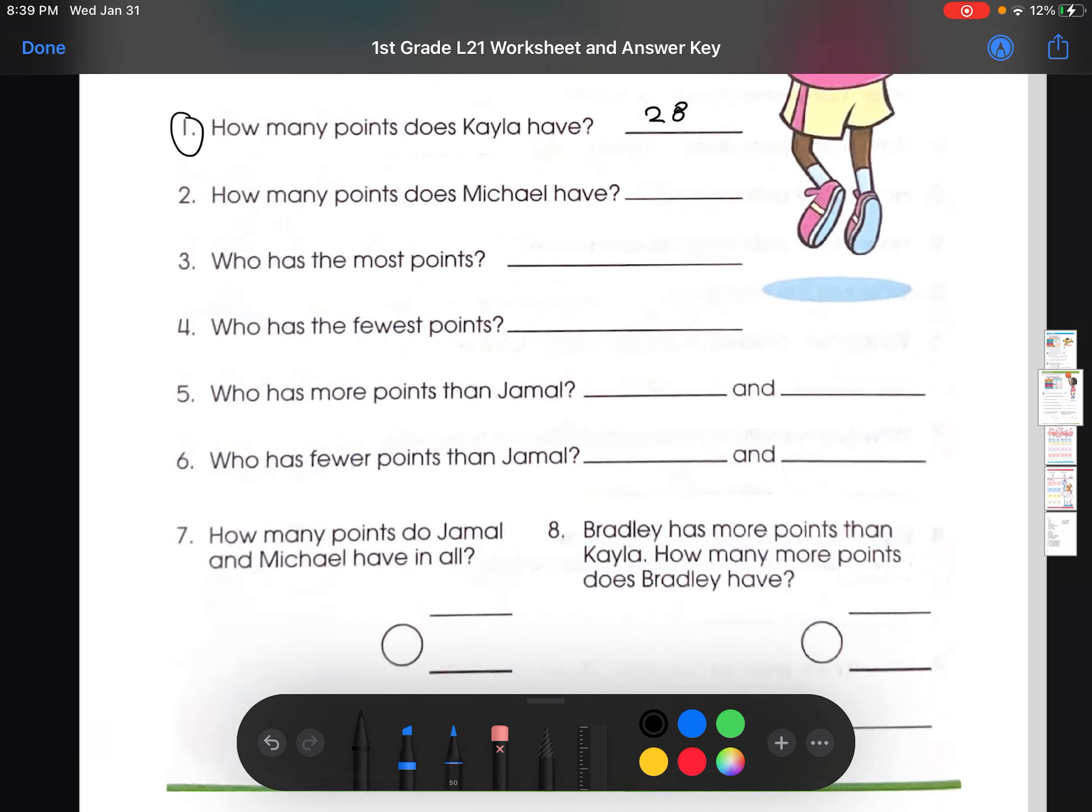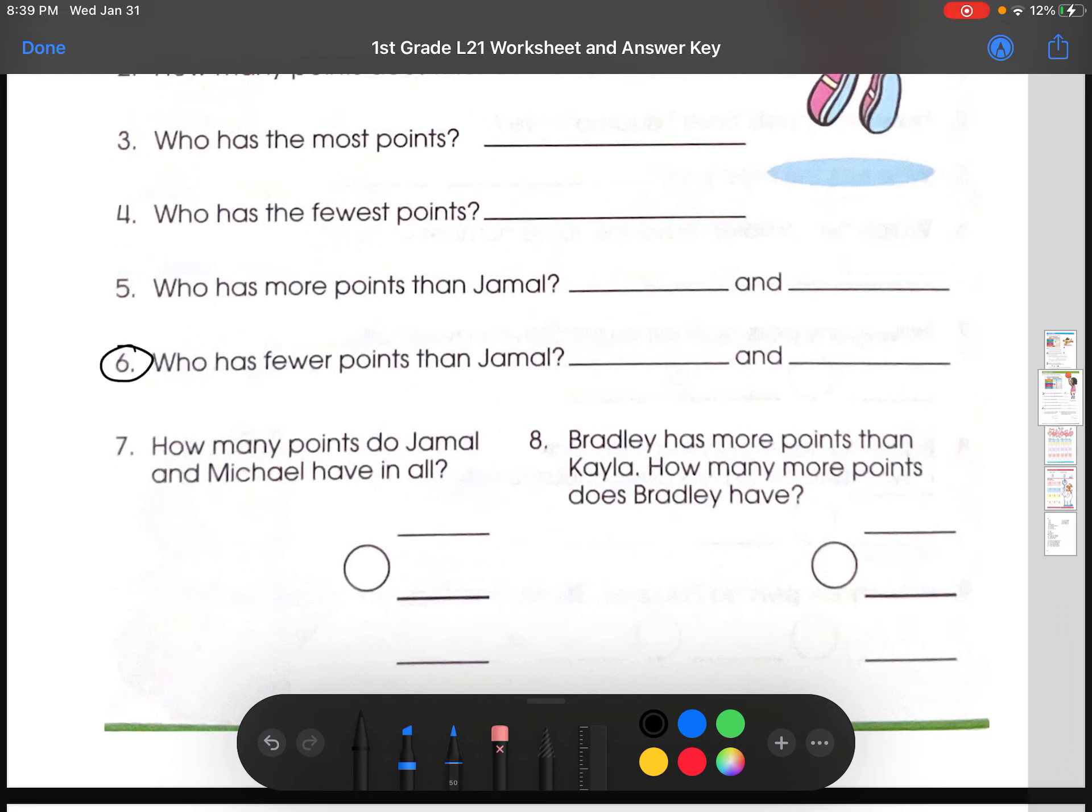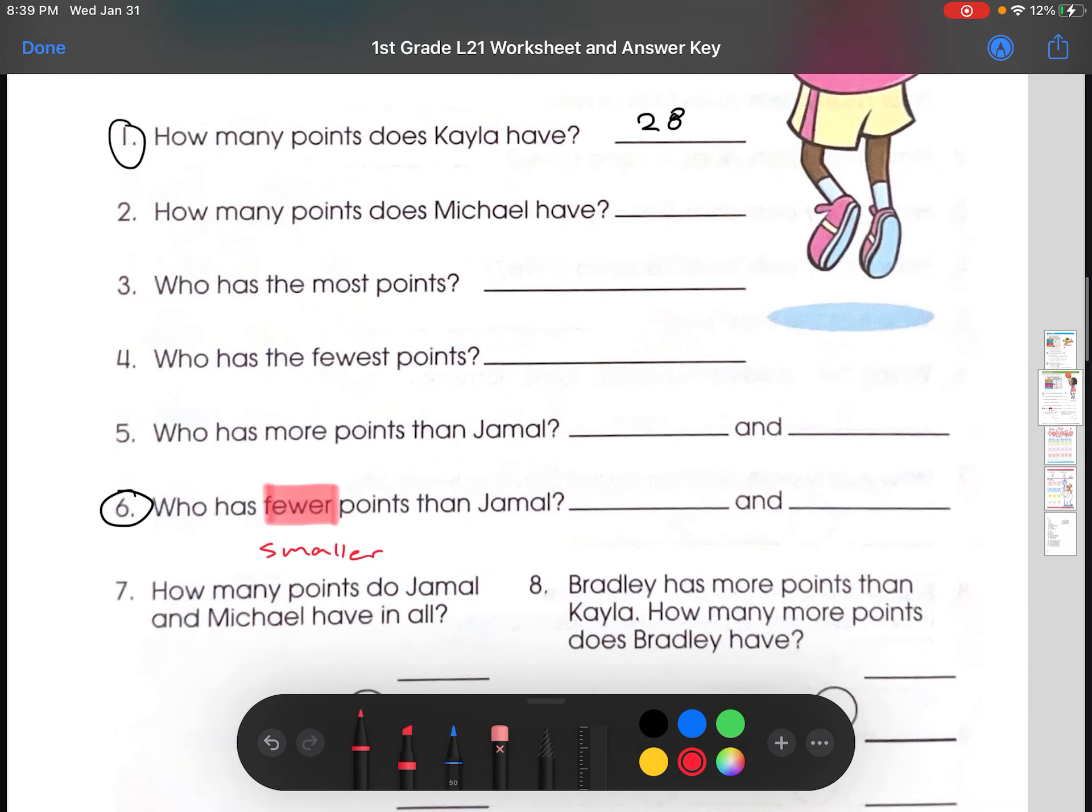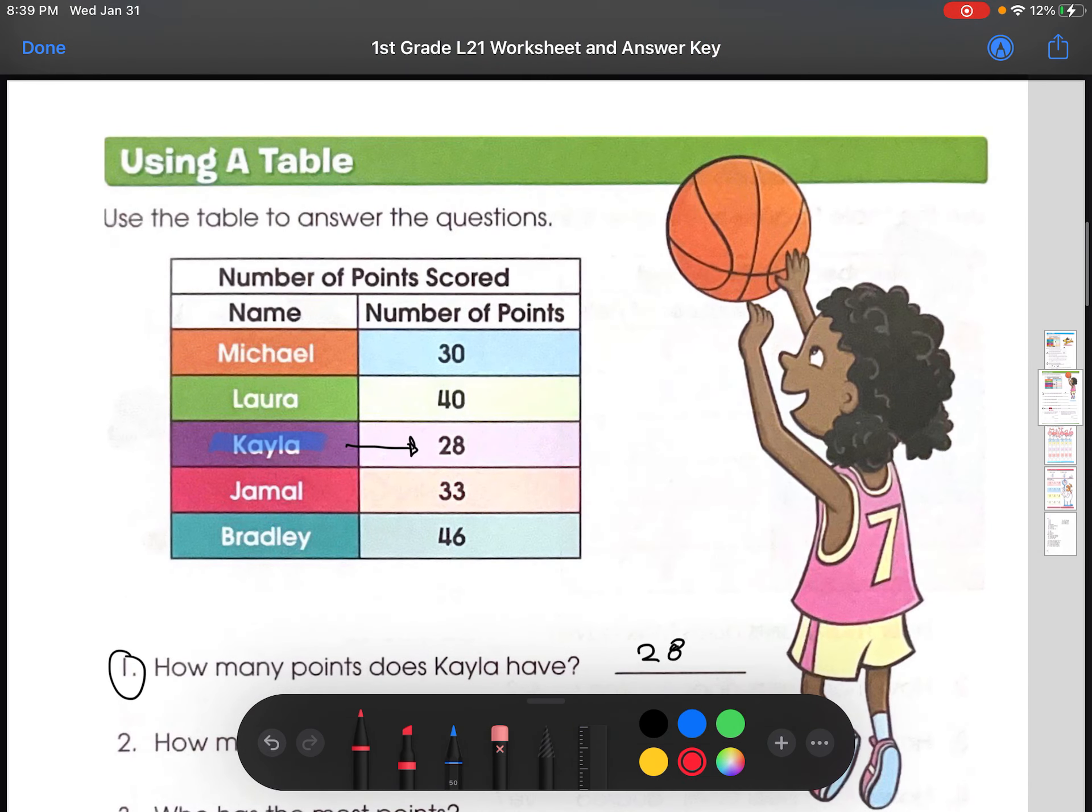Let's do number six. Who has fewer points than Jamal? So, fewer means fewer. For those of you guys who don't know, fewer means smaller. So, we're looking for a number that's less than the one Jamal has. So, if we go up here real quick and we look at Jamal, here, I'll highlight it in green. Jamal, right here. He has 33 points.